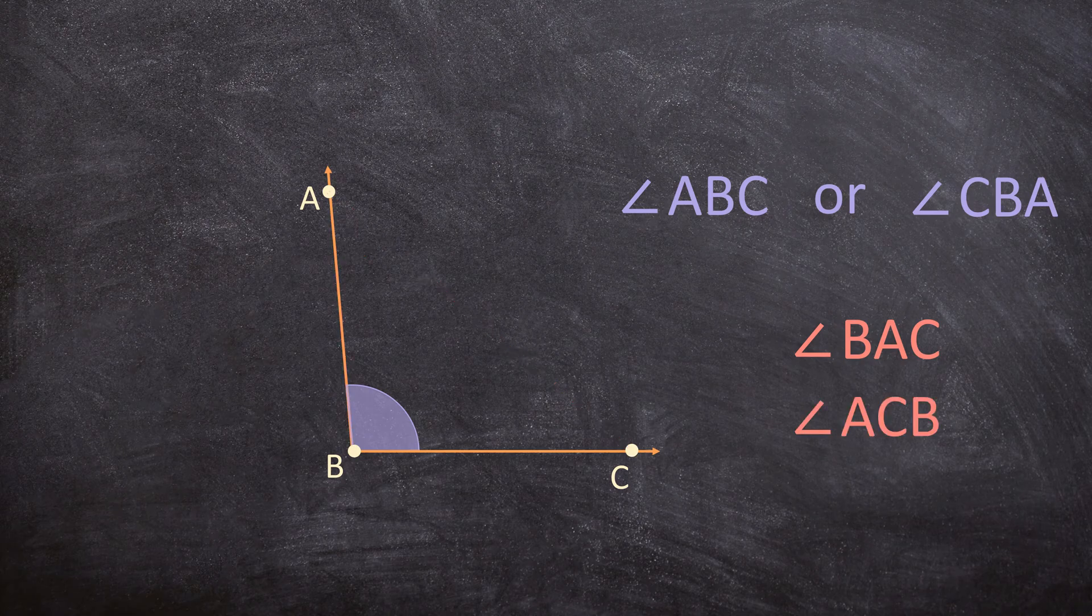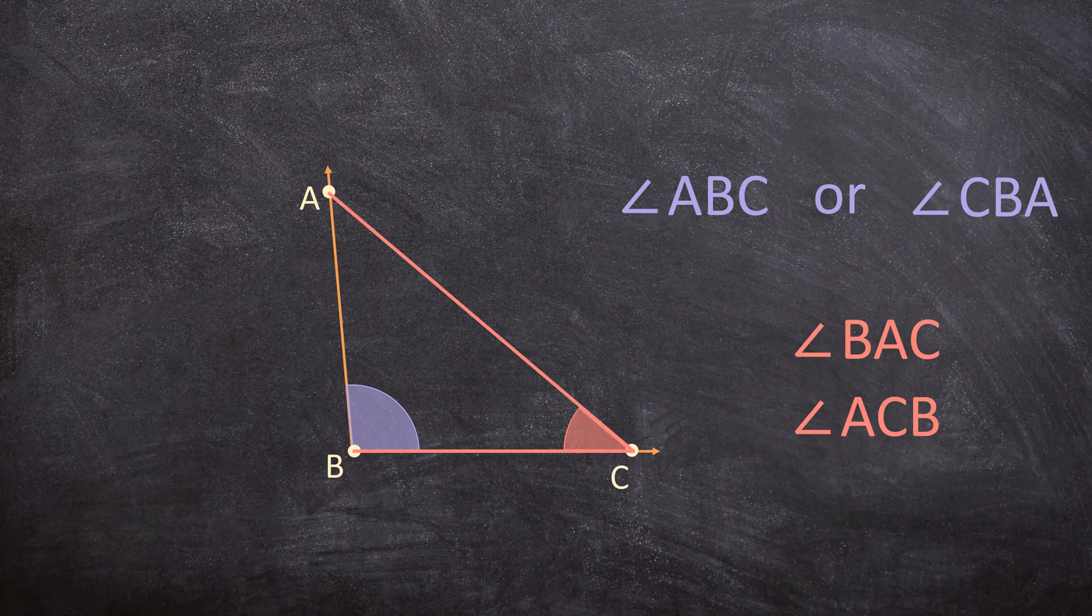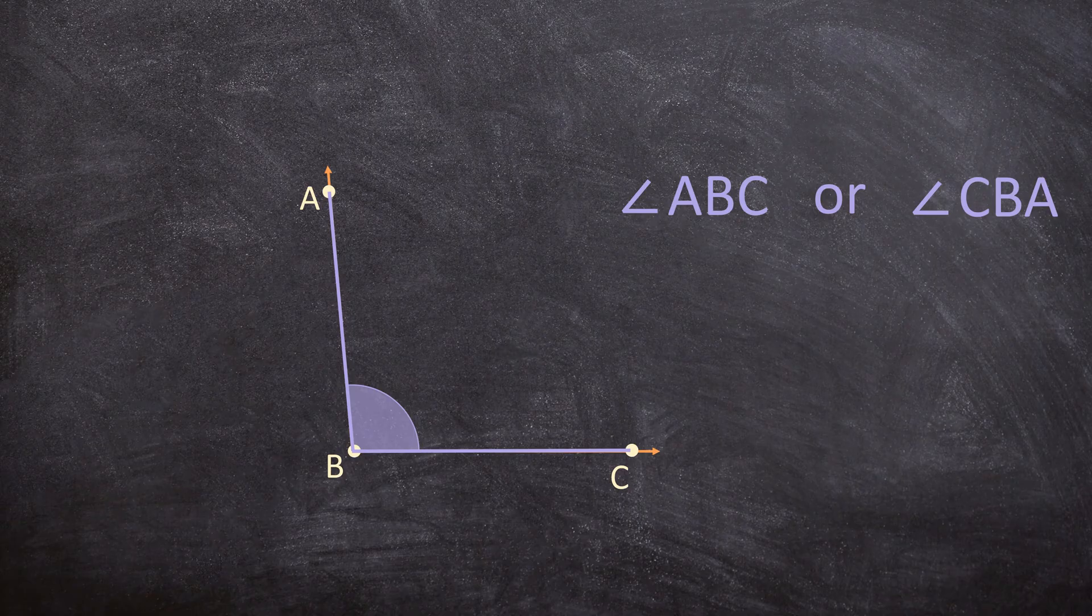Or what if you say angle ACB then you start at A go to C and then to B and then you'll be talking about this angle and that is still not the correct angle. This is why your vertex should always be in the middle.